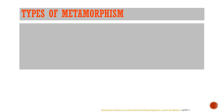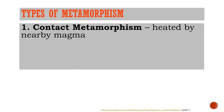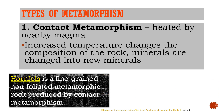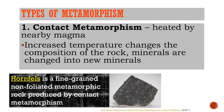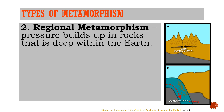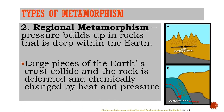There are two types of metamorphism: contact and regional. In contact metamorphism, rock is heated by nearby magma — increased temperature changes the composition of the rock and minerals are changed into new minerals. The best example of contact metamorphism is hornfels, a fine-grained non-foliated metamorphic rock. In regional metamorphism, pressure builds up in rock deep within the earth, large pieces of the earth's crust collide, and the rock is deformed and chemically changed by heat and pressure.